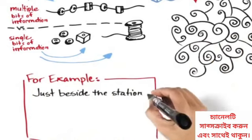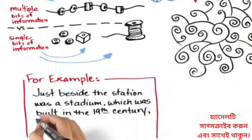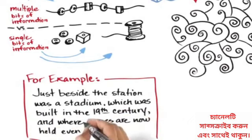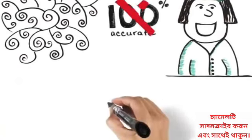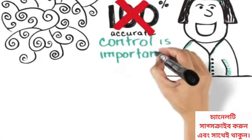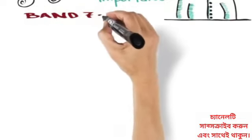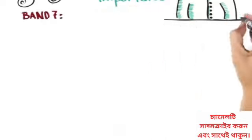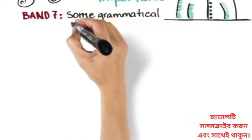For example, just beside the station was a stadium which was built in the 19th century, and where games are now held every weekend. It isn't expected that candidates are 100% accurate. However, control is important. The Band 7 definition for grammatical range and accuracy says, frequently produces error-free sentences, though some grammatical mistakes persist.